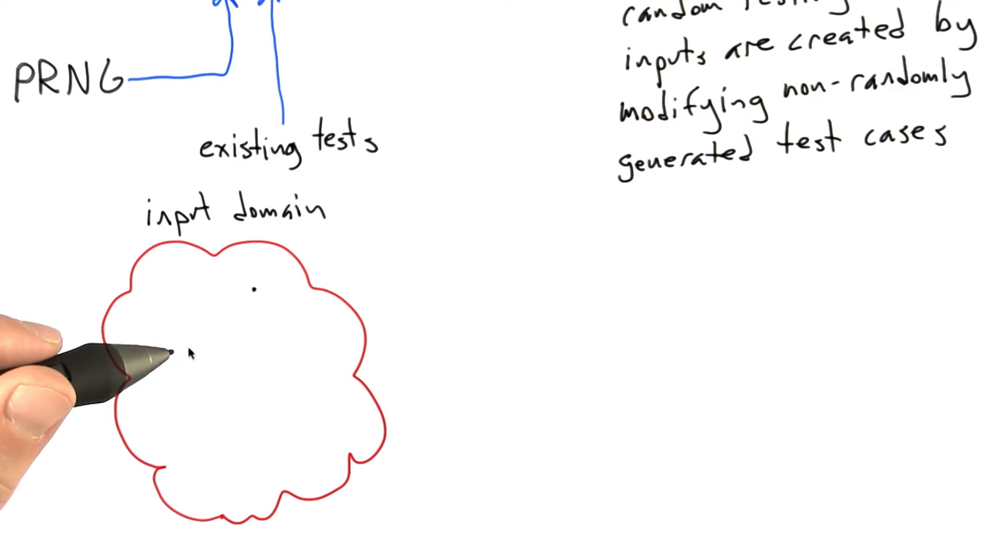What a mutation-based random tester is going to do is start with some known input, and what it's going to do is randomly modify it, and so it's going to end up with test cases that are in some sense in the same neighborhood as the original input. And so our mutation-based random tester is going to be able to access points like this. We start with a different input, it's going to be able to get points like this.